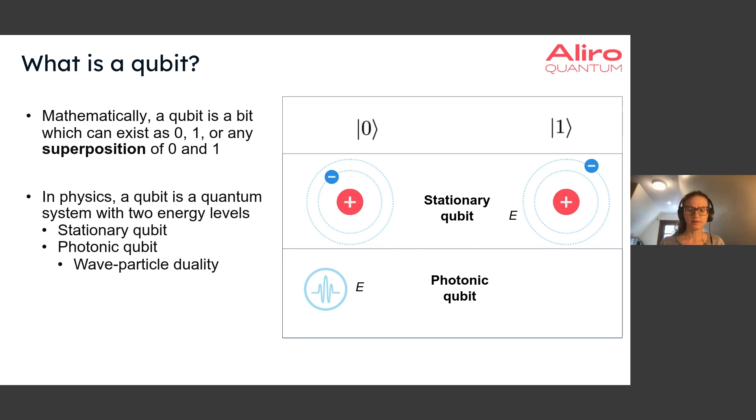For photonic qubits, there are different ways to encode quantum information, which we'll talk more about in later slides. The photons also have energy associated with them, so the superposition can happen through basically the same kind of superposition of either having this energy or not having this energy.